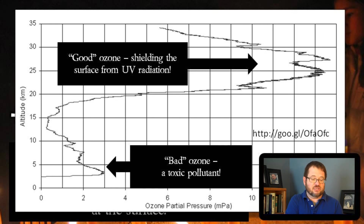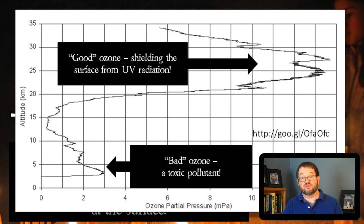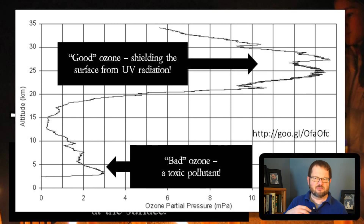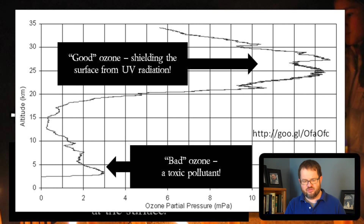Near the surface, ozone would get bigger and bigger as you approach the ground due to anthropogenic sources. That ozone has no reason to be there — almost all ozone near the surface of the earth is bad ozone. It's not stopping any ultraviolet radiation, it's enhancing the greenhouse effect, and it's a health hazard.